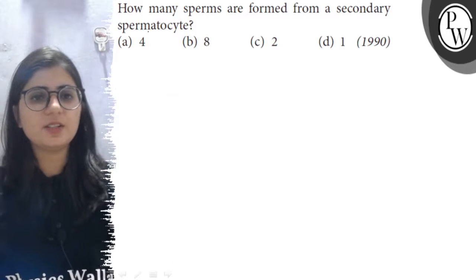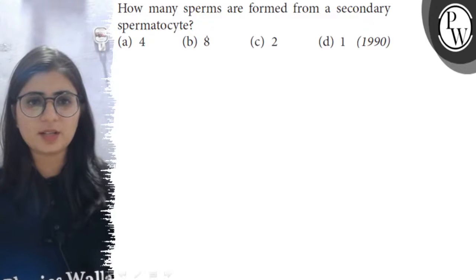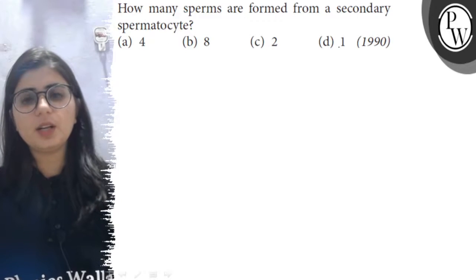Hello Bacho, let's see the question. How many sperms are formed from a secondary spermatocyte? The options are A4, B8, C2, and D1.